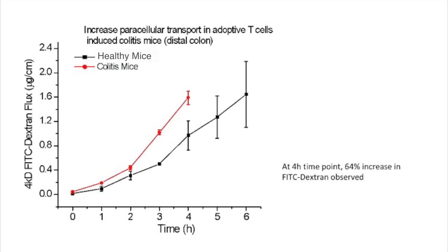In this graph you'll notice the mice that developed colitis, shown in red, have a higher intestinal permeability rate than the healthy mice. Increased permeability allows for bacteria and their products to cross the epithelial barrier and promote strong inflammatory responses. Inflammation also triggers changes in the gastrointestinal microbiome, leading to a state called dysbiosis. Microbial dysbiosis can be a result of inflammation, but also together with impaired epithelial barrier, can be a factor causing or contributing to inflammation.